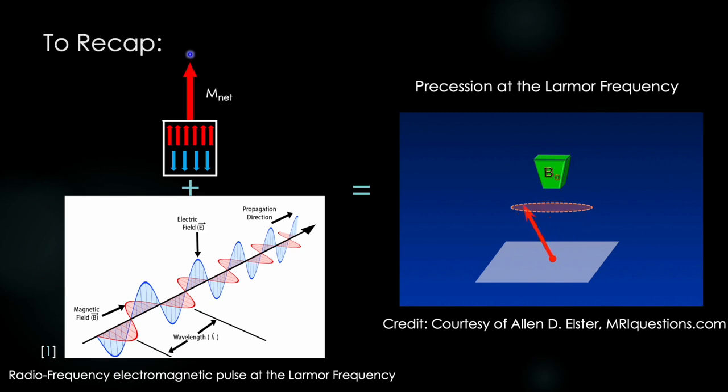Now if we can impart some energy to this magnet at the natural frequency it wants to rotate at, the Larmor frequency, we can push the magnet in our body away from the axis of the main external magnetic field, and it will start precessing like a top about the B0 axis as seen here. So how do we do this? How do we push a magnet inside our body? We fight fire with fire.